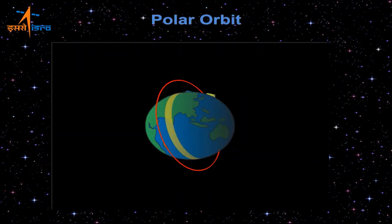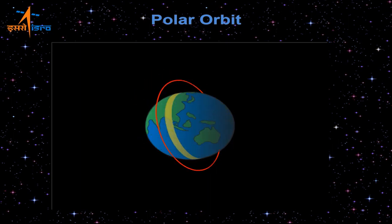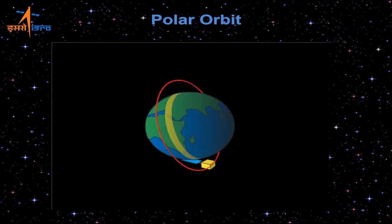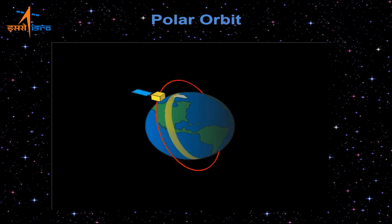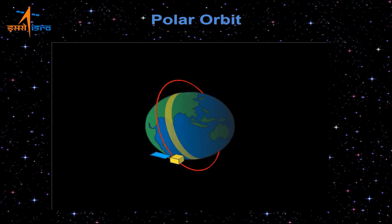Let us understand various satellite orbits. A satellite is in a polar orbit when it moves in an orbit that passes through the poles of the Earth. The Earth rotates about the axis passing through its north and south poles. As a polar satellite moves from pole to pole, the Earth rotates inside its orbit, allowing the satellite to trace a path and cover that track through its instruments.